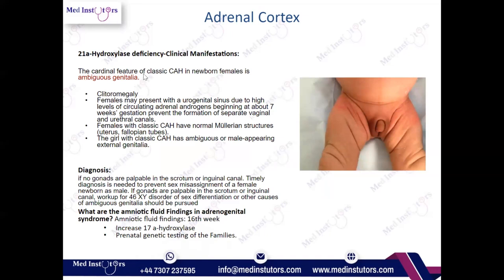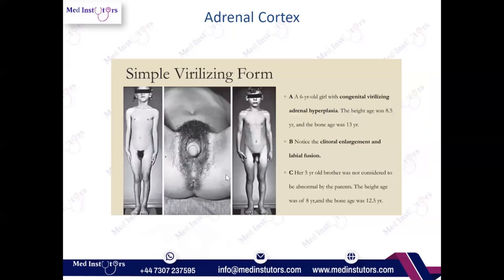In 21-hydroxylase deficiency, the baby may present with ambiguous genitalia. Due to excessive androgens, females may have clitoromegaly and urogenital sinus due to high circulating adrenal androgens. Remember: 21-alpha-hydroxylase deficiency is the most common cause of congenital adrenal hyperplasia, and it follows an autosomal recessive inheritance pattern. Excess androgens lead to virilization — both affected girls and boys may present with excessive pubic hair.